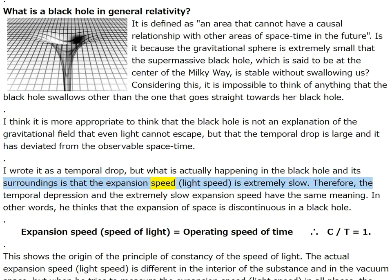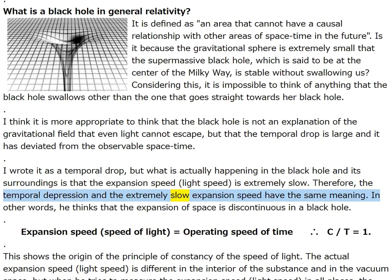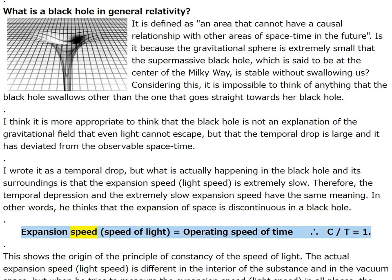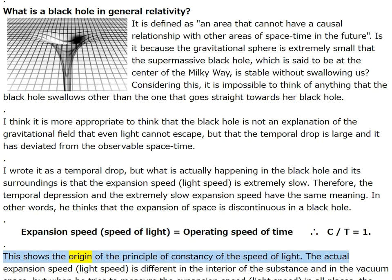The temporal depression and the extremely slow expansion speed have the same meaning — the expansion of space is discontinuous in a black hole. Expansion speed (speed of light) equals operating speed of time; therefore c/t = 1. This shows the origin of the principle of constancy of the speed of light.